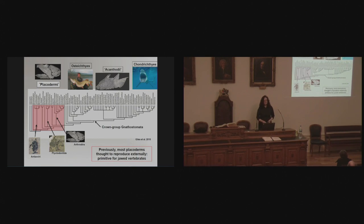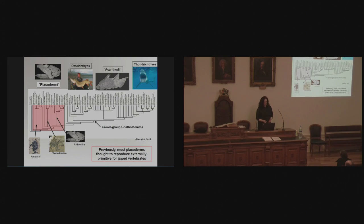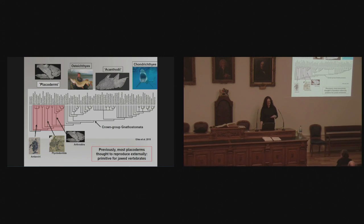That includes reproduction, which is the focus of this talk. Previously, most placoderms were thought to reproduce externally — the female would lay eggs, the male would come by and fertilize them, and this was thought to be primitive for jawed vertebrates. That makes some sense because it seems like an easy or simple way to reproduce — not much cost. But I hope to convince you by the end of the talk that our new data shows this is actually not true.